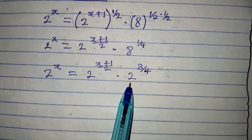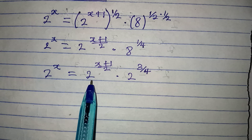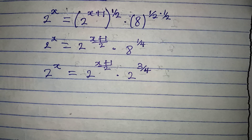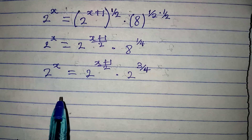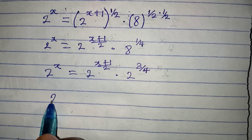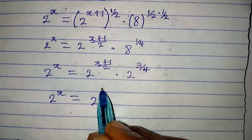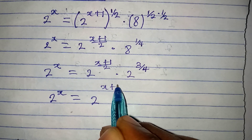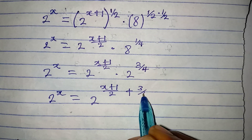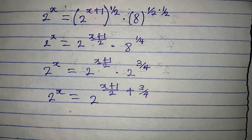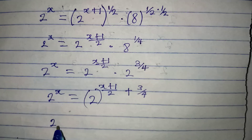Remember, on the right-hand side we have base 2, so we can pick one and add the powers according to the law of indices. So 2 to the power of x will be equal to 2 to the power of (x+1)/2 plus 3/4. Now let's deal with that power.